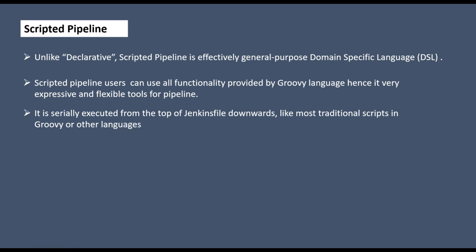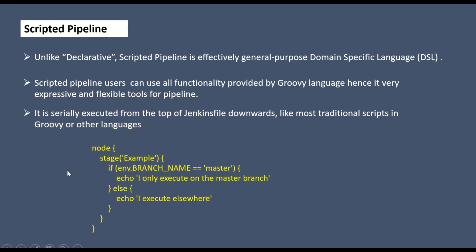Scripted pipeline is executed serially from top to bottom, like most traditional scripts in Groovy or other languages. You can only execute from top to bottom, not bottom to top or middle to top. For example, if you have 'yum install httpd' and 'yum install vim', the httpd package will be installed first, then the vim package — strictly top to bottom.